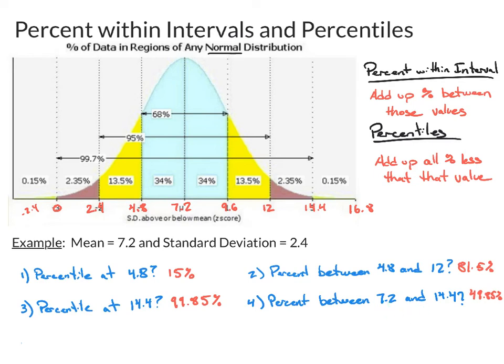We'll look at two last examples here. We have the percentile at 7.2. Oh, well, 7.2, that's right there in the middle. Well, percentile in the middle, so that's got to be 50%, right? So that's the 50th percentile, and if you add all those up, it's what you would get.